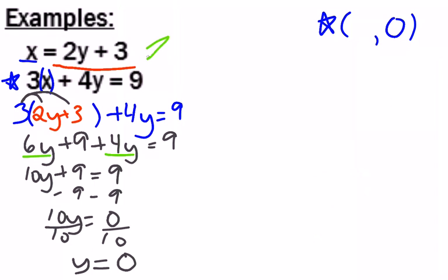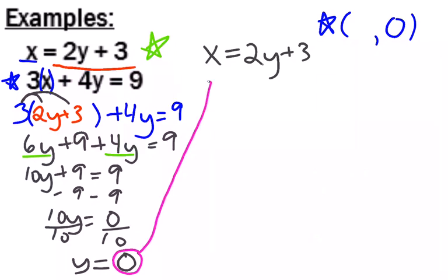It doesn't matter whether I do the first or the second one. But when I'm doing substitution, this first one is usually the way to go, the one where your variable has been isolated. So I'm going to use x equals 2y plus 3. Since we found out that y is 0, I'm going to plug in 0 for y up here.